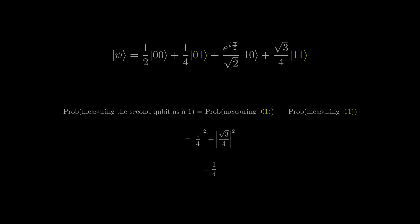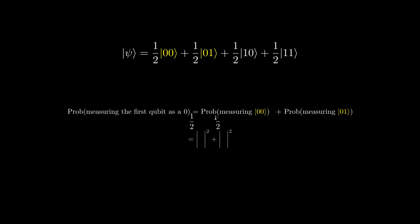Let's do an example. If we wanted to find the probability of measuring a 0 in the first qubit, then we sum the probabilities of measuring each of the states where the first qubit is a 0.